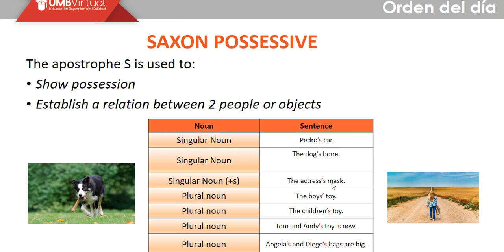Examples include: the dog's bone, the actress's mask, the boy's toy, the children's toy. Tommy and Andy's toy is new, and Angela's and Diego's balls are big. As you can see, for the first and second examples we use apostrophe plus S, indicating possession — Pedro's car means the car of Pedro, the dog's bone means the bone of the dog. According to grammar rules, for singular nouns we just add apostrophe S.